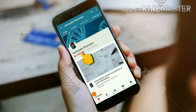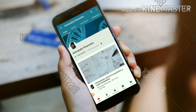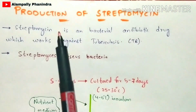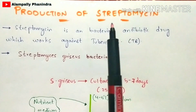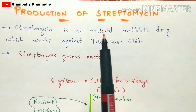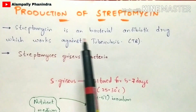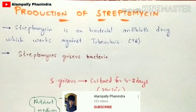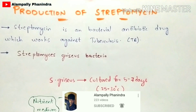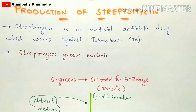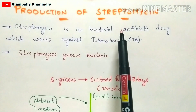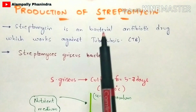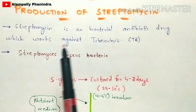In this video, let us discuss about the production of streptomycin in detail. Streptomycin is a bacterial antibiotic drug which works against tuberculosis. If a person is infected with tuberculosis, he can be treated by injecting the streptomycin drug. So how can streptomycin be produced?